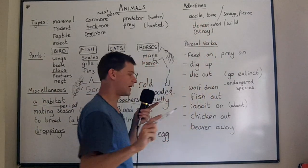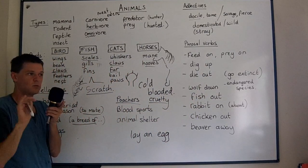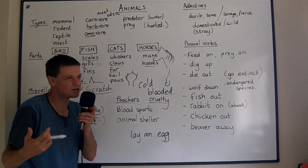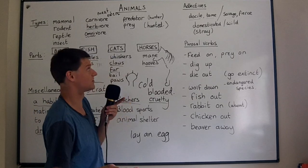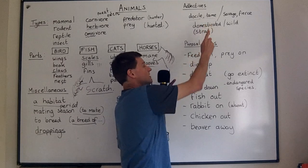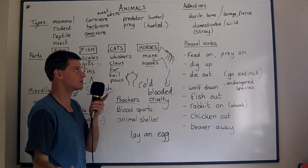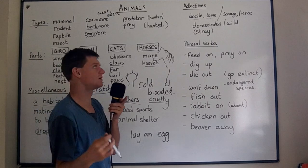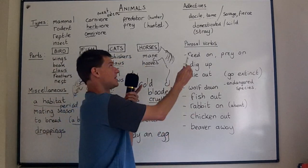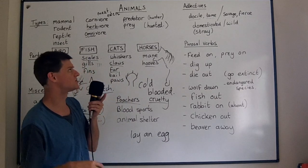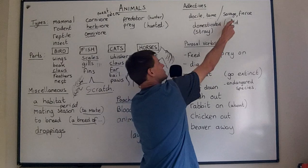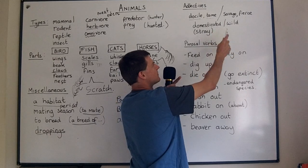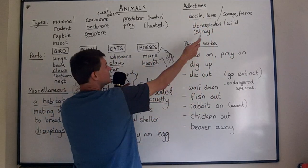Some adjectives: docile means not aggressive — a docile animal won't attack you. Tame means it has got used to humans, so it usually won't attack you either. Savage and fierce both sound very aggressive and violent — we'd use these for wild animals like lions or tigers. We also have domesticated animals, which are animals you keep at home, and wild animals — animals in the wild.